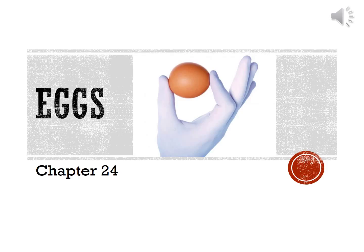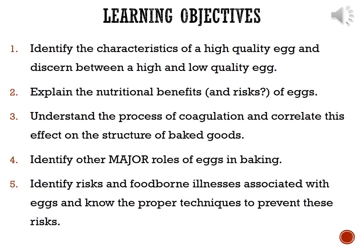On we go to chapter 24, and in this chapter we're going to be talking about eggs. Just like last chapter, this one will be broken down into three different sections. We'll start off by looking at the nutritional and chemical composition of eggs, we'll talk about what happens when we cook with eggs and the applications of egg cooking, and finally we'll look at food safety and eggs.